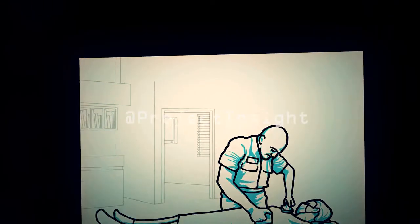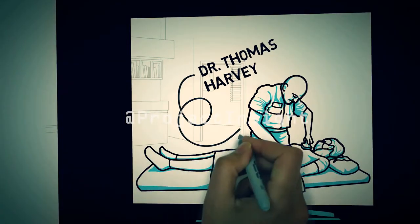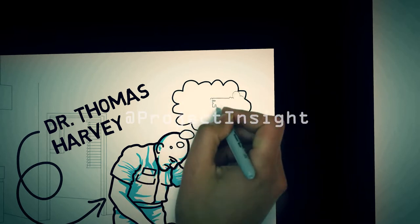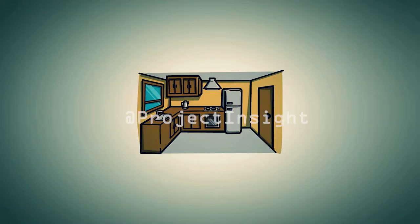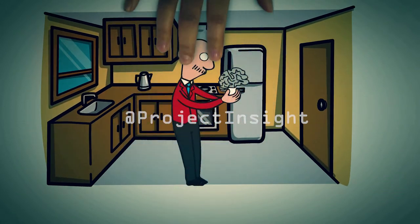Dr. Thomas Harvey decided to remove the brain on his own initiative for future study. Dr. Harvey took Einstein's brain home, divided it into 240 pieces, and stored it in two mason jars filled with celloidin.